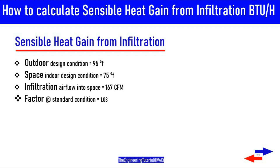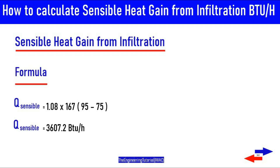The infiltration airflow rate into the space is 167 CFM and the factor at standard condition is 1.08. It is important to realize that 1.08 is not constant — it is derived from properties of dry air at standard conditions of 69 degrees Fahrenheit at sea level. At other conditions and elevations, these factors will change. So Qs equals 1.08 times 167 CFM times (95 minus 75).